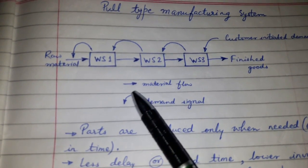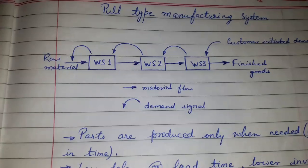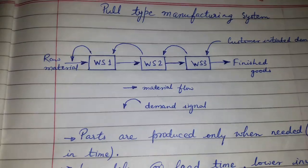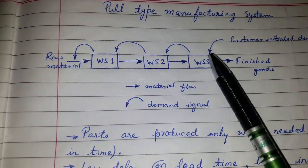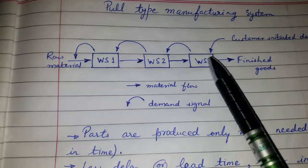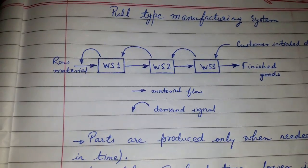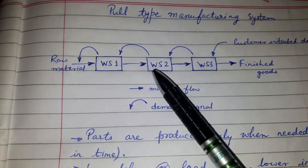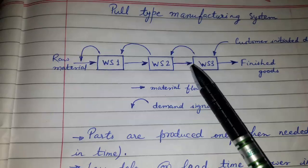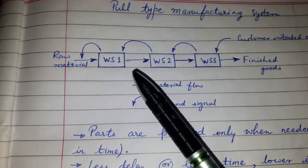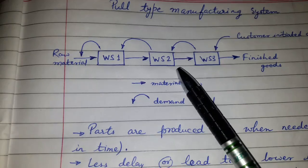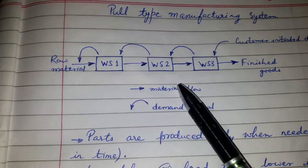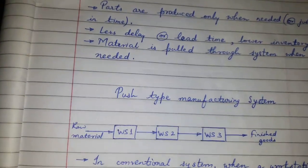Parts are produced only when they are needed — just in time. Because of this, there will be less delay since it is produced only when required, and all focus is on that component. There will be lower lead time and lower inventory because you are producing as and when required. The material is pulled through the system when needed — this is the pull type manufacturing system.